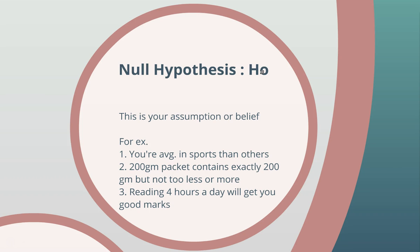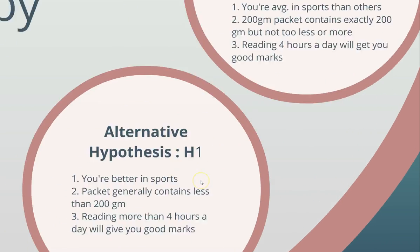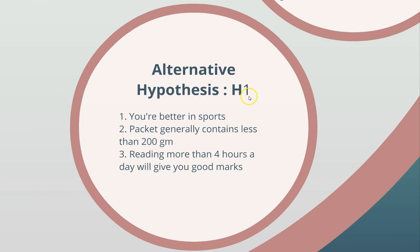Apart from the null hypothesis, there is the alternative hypothesis, which is a statement completely opposite to or different from the null hypothesis. We denote it as H₁. For example, in the first example — you are average in sports — after testing you might find that the null hypothesis was not correct, and the alternative hypothesis is correct: that you are better in sports.